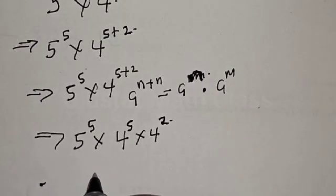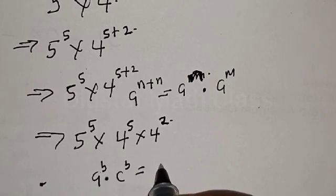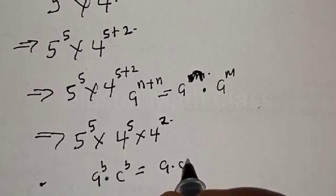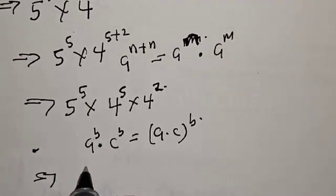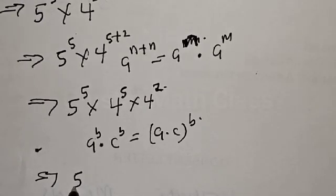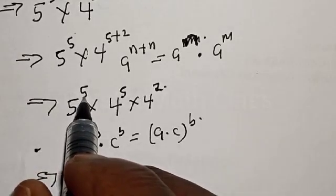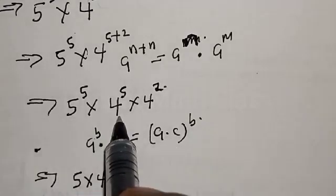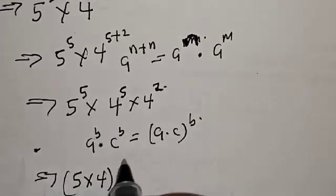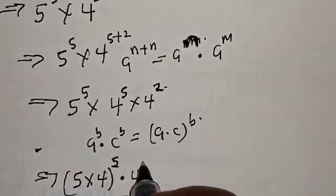Remember also: if you have a raised to power b multiplied by c raised to power b, that is the same as a multiplied by c, raised to power b. So since both terms share the same exponent of 5, with a equal to 5 and c equal to 4, we have 5 times 4 raised to power 5, then multiplied by 4 squared.